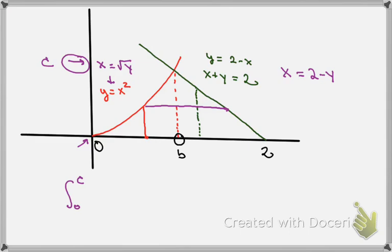So the rightmost function is that green function, which is x is equal to 2 minus y. And I'm going to subtract from that the leftmost function, which would be x is equal to the square root of y. Let me use a bracket, and that's dy.